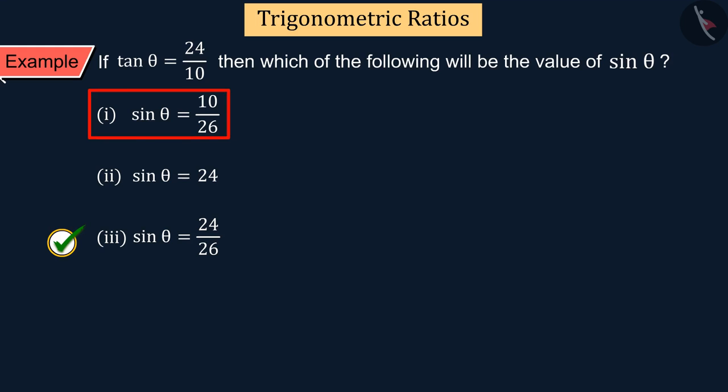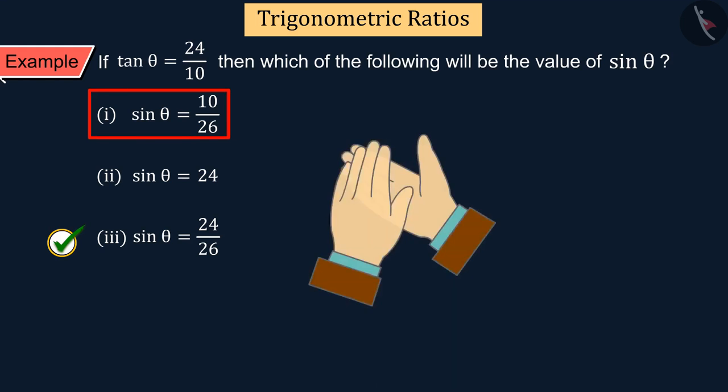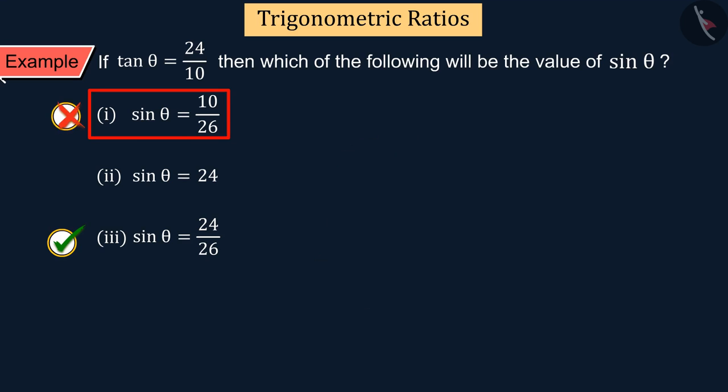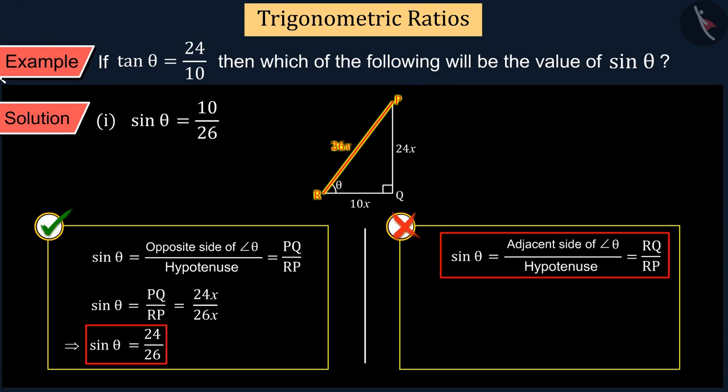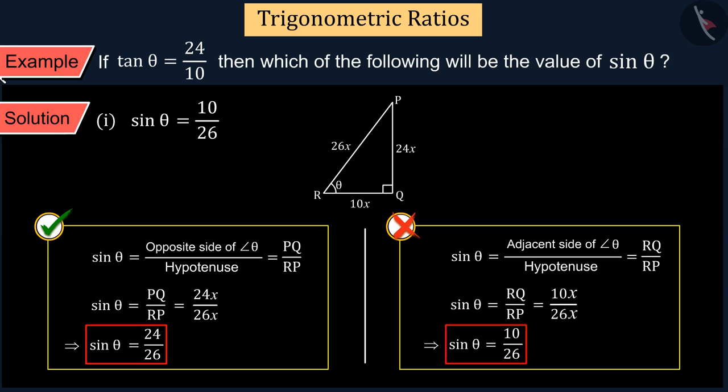If you chose option 1, then it is a good try, but this is the wrong answer. From the beginning of the solution till you calculated the hypotenuse, you did the process correctly, but to calculate sin θ, you used the adjacent side instead of the opposite side, which caused your answer to be incorrect.